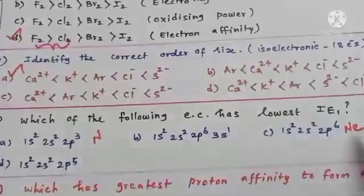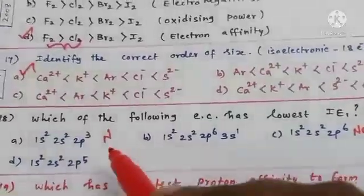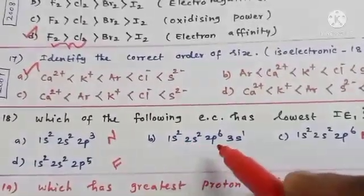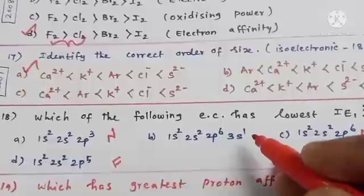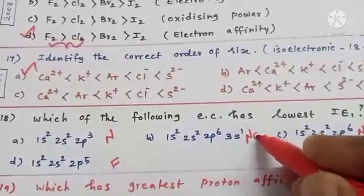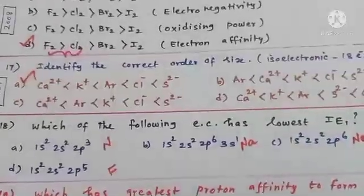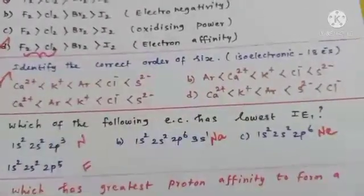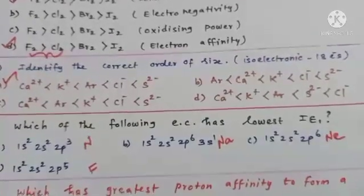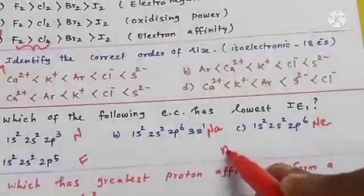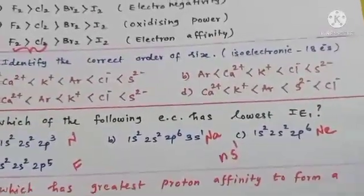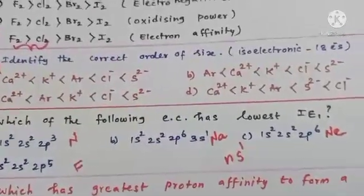Option C is fluorine (atomic number 9). Option B, 1s² 2s² 2p⁶ 3s¹, is atomic number 11 — sodium. Alkali metals have the lowest ionization enthalpy because they have an ns¹ configuration with one valence electron. After losing that valence electron they attain a stable fully filled configuration, so minimum energy is required to remove the first electron.